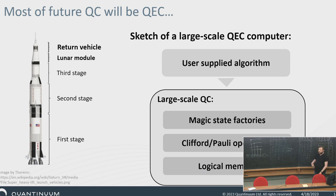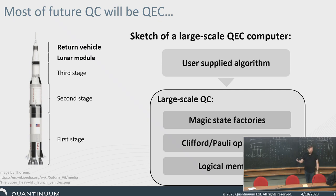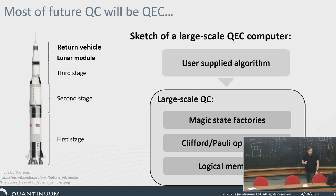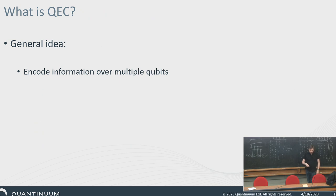The user supplies some algorithm to the quantum device, which might be a hybrid system — perhaps a co-processor for some high-performance computer. Quantum error correction will do its magic under the hood. There are a variety of things it needs to do: magic state factories, Clifford and Pauli operations on the logical level, logical memory, and so forth. But 99% of it is quantum error correction.